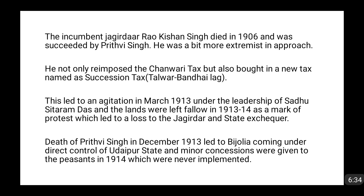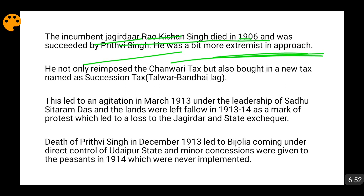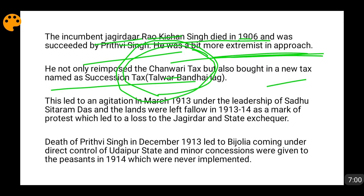Then the incumbent Jagirdar, Rao Kishan Singh, died in 1906, and Prithvi Singh became the new Jagirdar. Prithvi Singh was a little extremist in his approach. He re-imposed the Chanwari tax and additionally brought in a new tax named the Succession Tax, also known as Talwar Bandhai Laag. This led to major agitation that started in March 1913 under the leadership of Sadhu Sita Ramdas. A lot of petitions were sent, but the Jagirdar was not yielding.